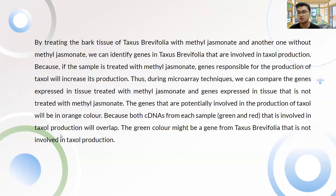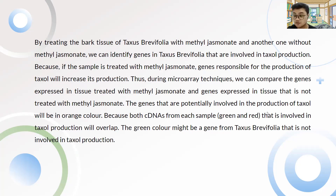To confirm which genes are involved in taxol production: by treating Taxus brevifolia tissue with methyl jasmonate and comparing it to an untreated sample, we can identify genes involved in taxol production. Genes responsible for taxol production will show increased expression in the treated sample. Using microarray, we compare gene expression in both conditions. Genes potentially involved in taxol production will appear orange, because both the red and green cDNA signals overlap at those spots.